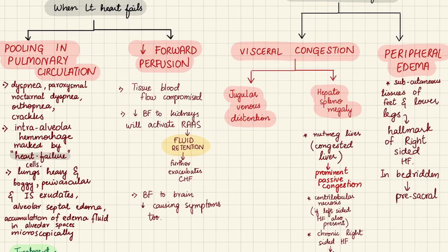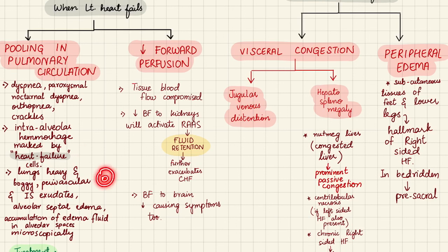Due to pulmonary congestion, intra-alveolar hemorrhage can occur — blood leaks into the alveoli and macrophages phagocytose the RBCs, converting hemoglobin into hemosiderin. These macrophages have a characteristic brownish appearance and are known as heart failure cells. On gross appearance, the lungs are heavy and boggy; perivascular and interstitial spaces are filled with exudate; alveolar septa are edematous; and edema fluid accumulates in alveolar spaces on microscopy.